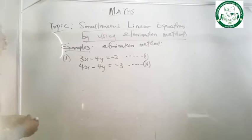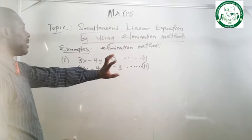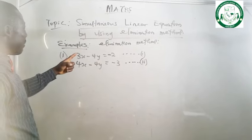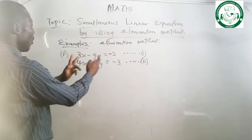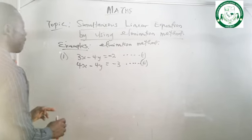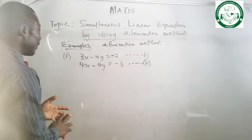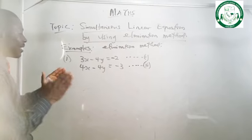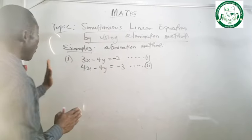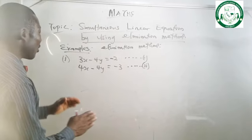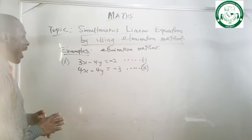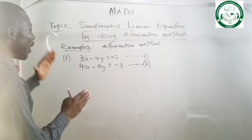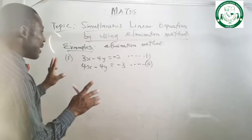We have two rules that will make this method work. Number one, the sign of the number you want to eliminate must be opposite each other — that is, one must be plus and the other must be minus. While the second rule says the number must be the same. If the numbers are not the same, we have to ensure that we make the numbers to be the same.